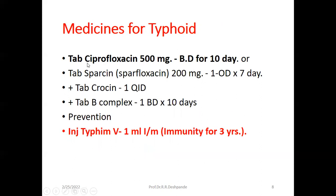Specific medicines: Tablet ciprofloxacin 500 mg, morning and evening — BD, twice a day — for 10 days. Ciprofloxacin is a specific antibiotic. Previously, only chloramphenicol was used in typhoid, but now ciprofloxacin or sparfloxacin 200 mg once a day for 7 days is used. Sparfloxacin is a higher-generation antibiotic, so the dose is less and frequency is also reduced.